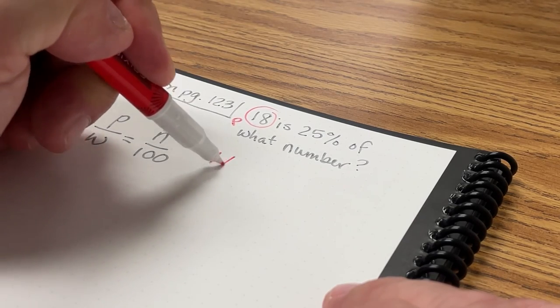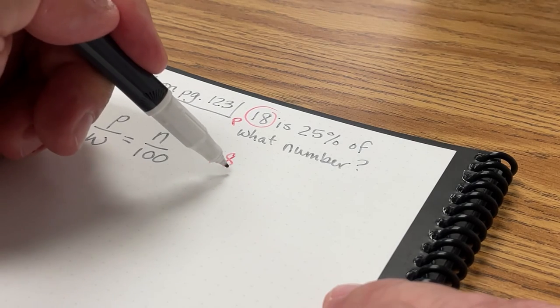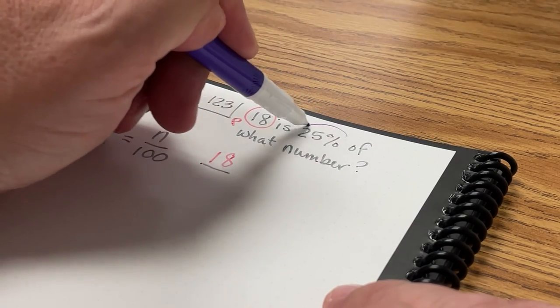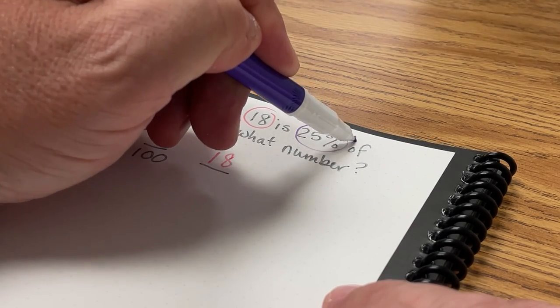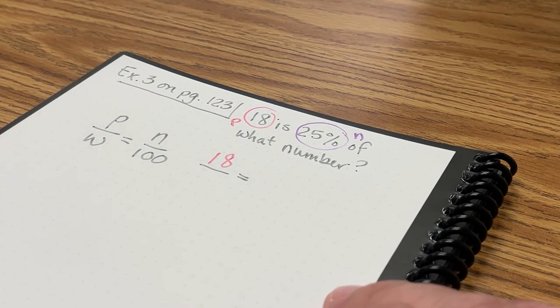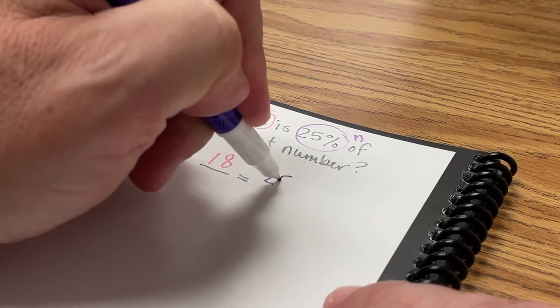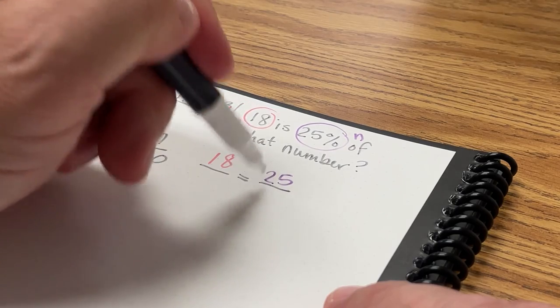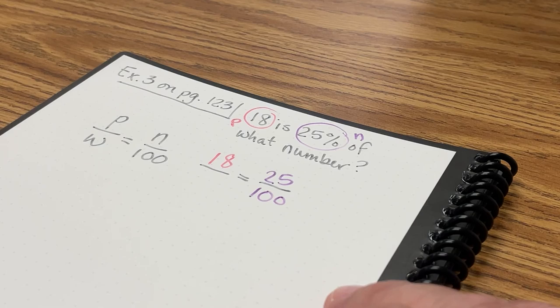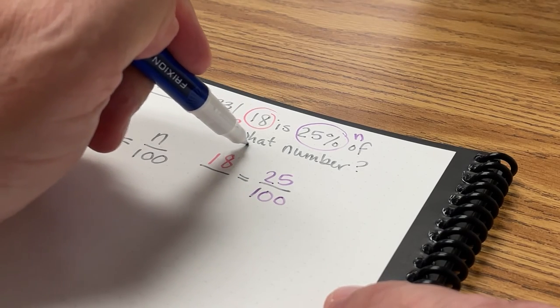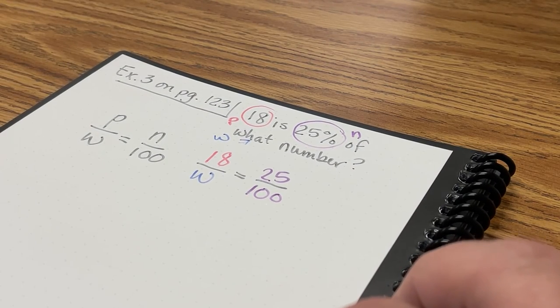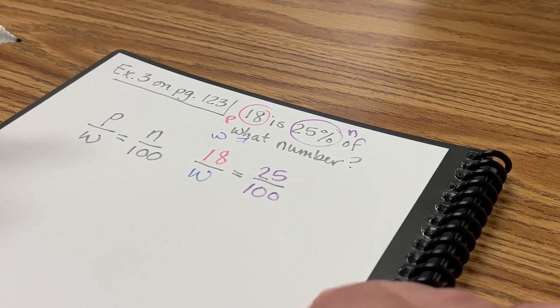18 is going to be my part. That's going to be over some number, some whole number. I don't know what that is. The 25% is going to be the N of my percent. So I'm going to write 25 over 100. And then underneath the 18, my what number is going to be my whole. And now I can get ready for cross products.